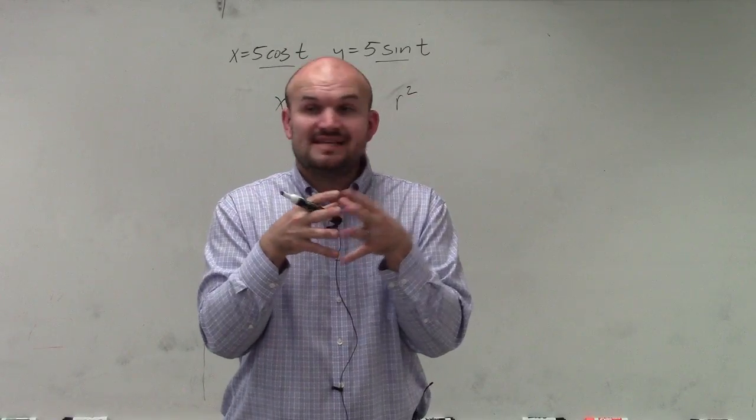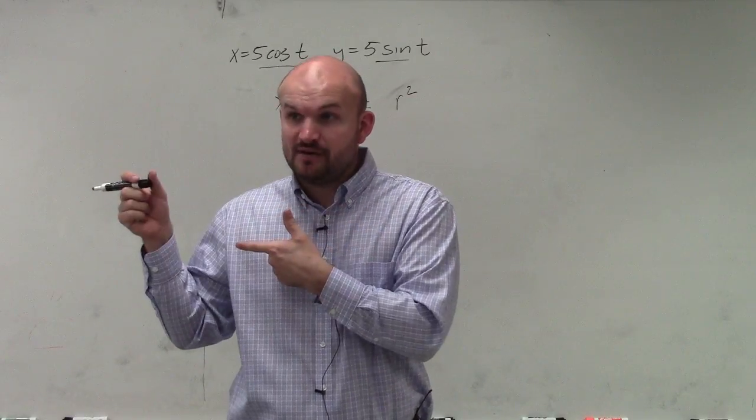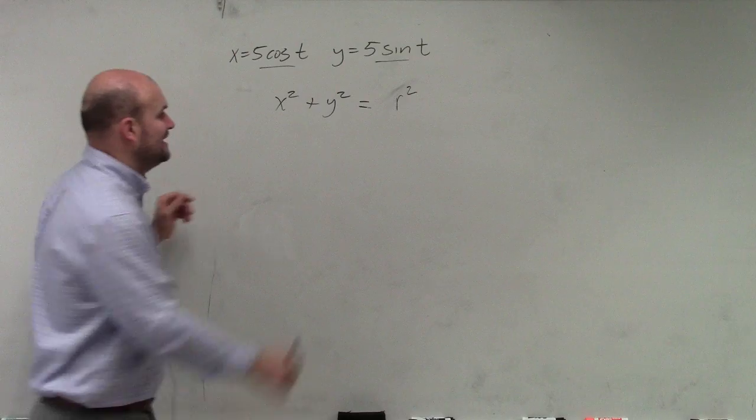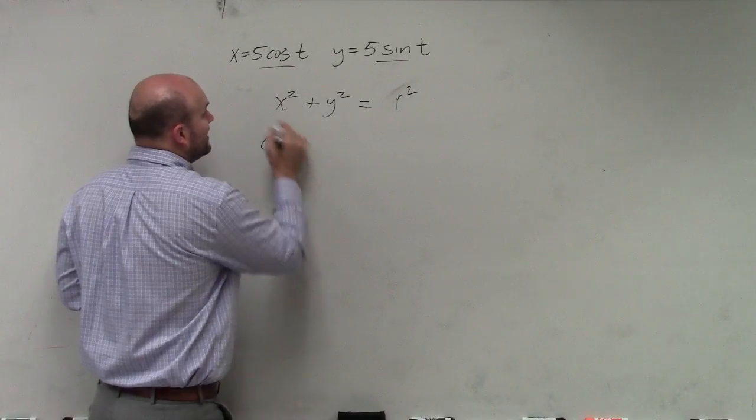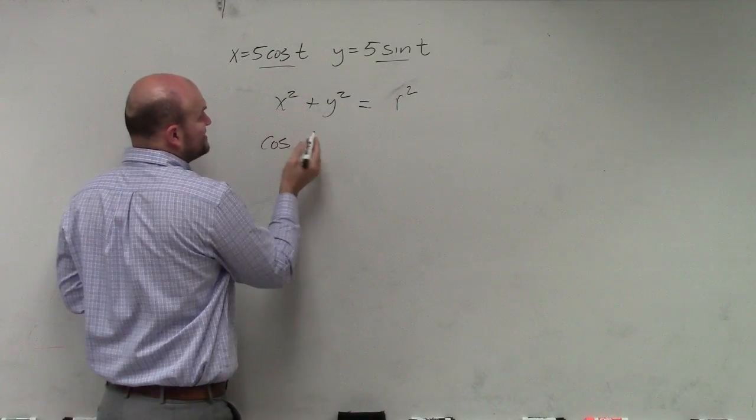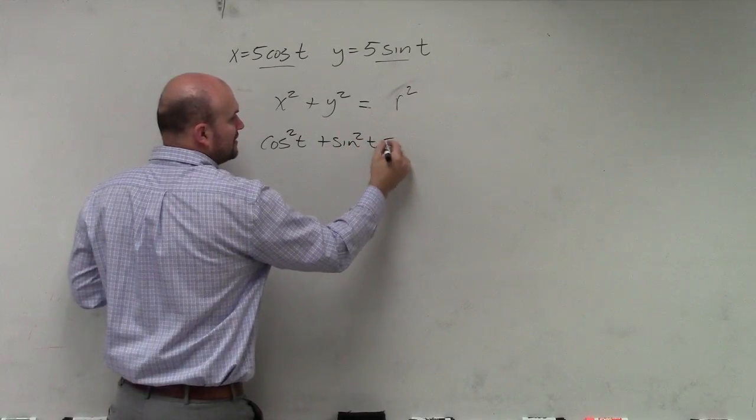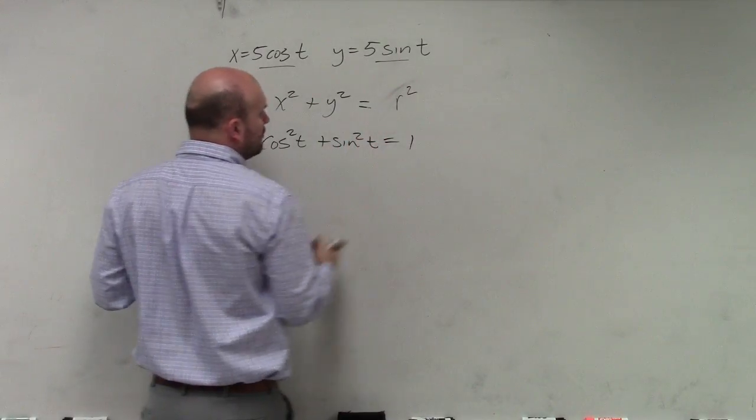But we know what sine and cosine is, as far as parametric form, how they're related to give us the form of a circle. And that comes into our Pythagorean identity. You could say that cosine squared of t plus sine squared of t equals 1 squared, or just 1.